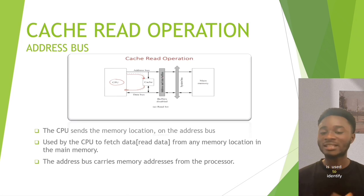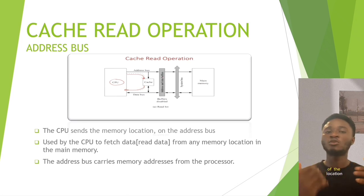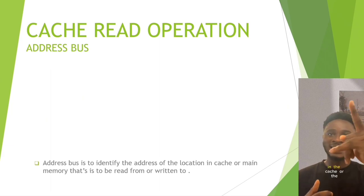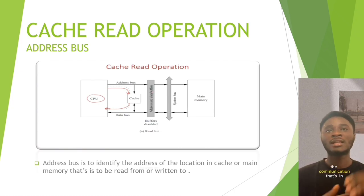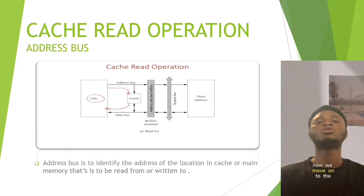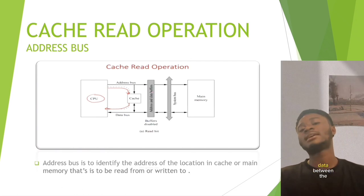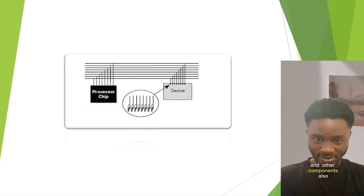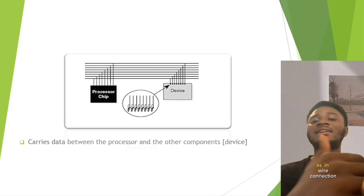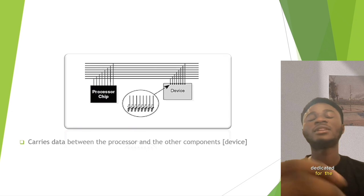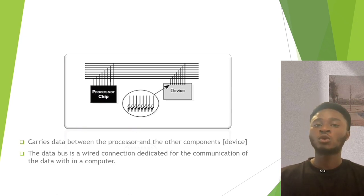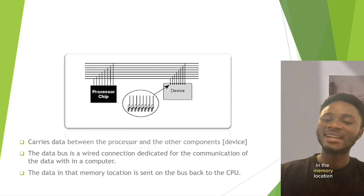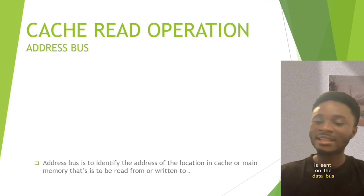That is the communication that exists between the address bus and cache. Now we move on to the data bus. The data bus carries data between the processor and other components. It has dedicated wires for transmitting data between the CPU and other hardware components. The data at the memory location is sent on the data bus back to the CPU.